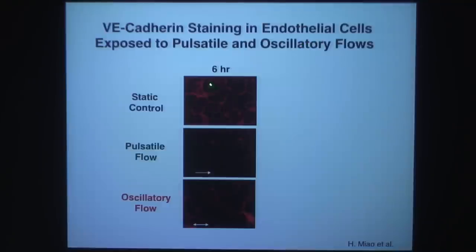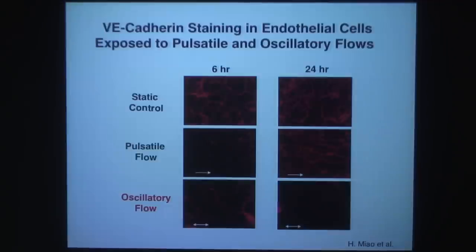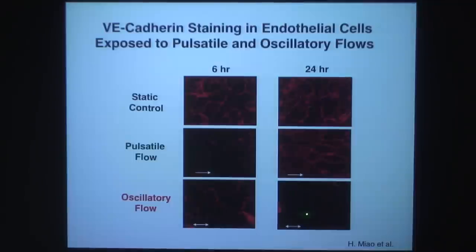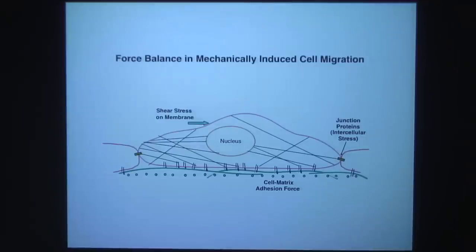When exposed to pulsatile flow or oscillatory flow, junctions are initially disrupted. With time, pulsatile flow restores the junction — cells align with the flow direction. But oscillatory flow never recovers the junction, so junctions are not working well under oscillatory shear.